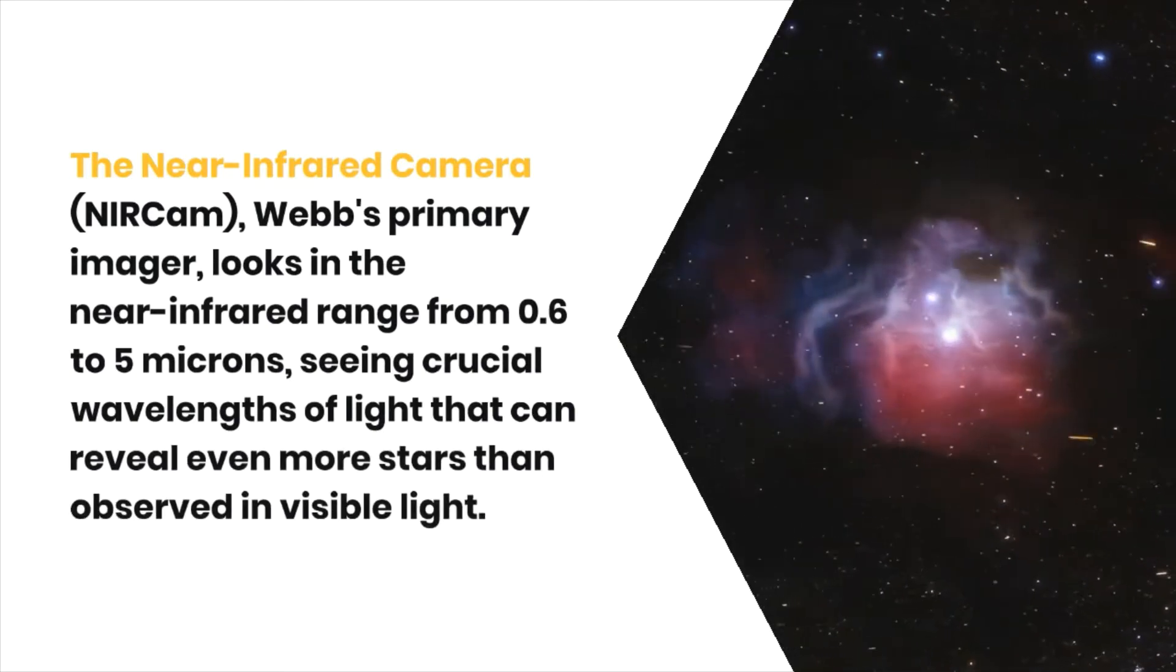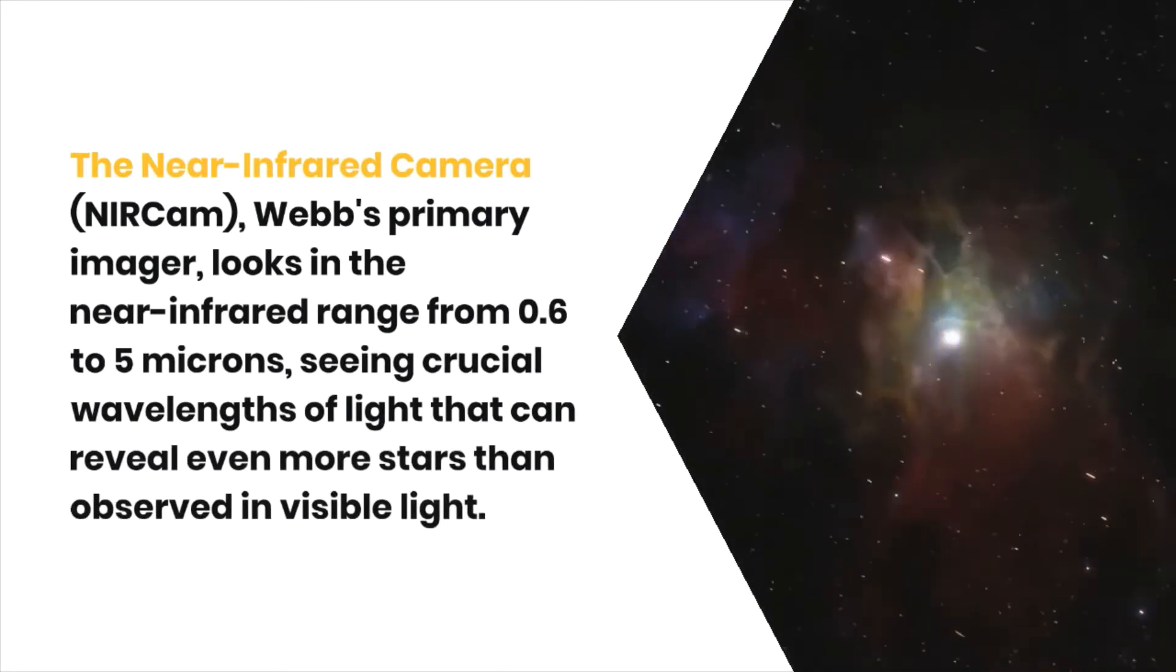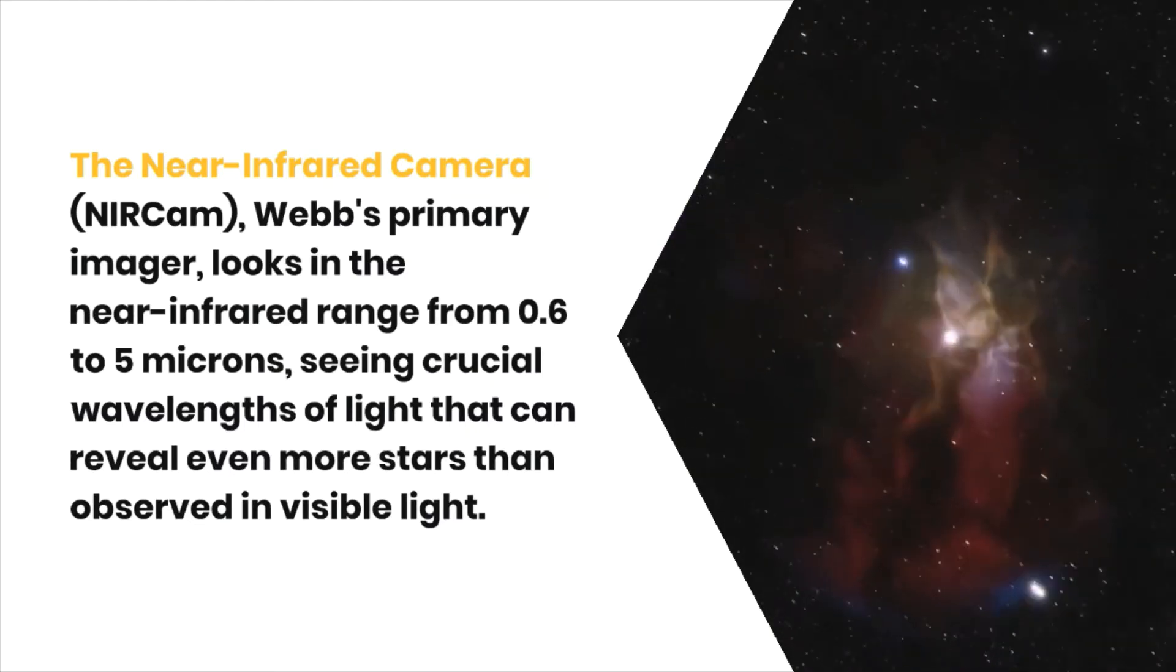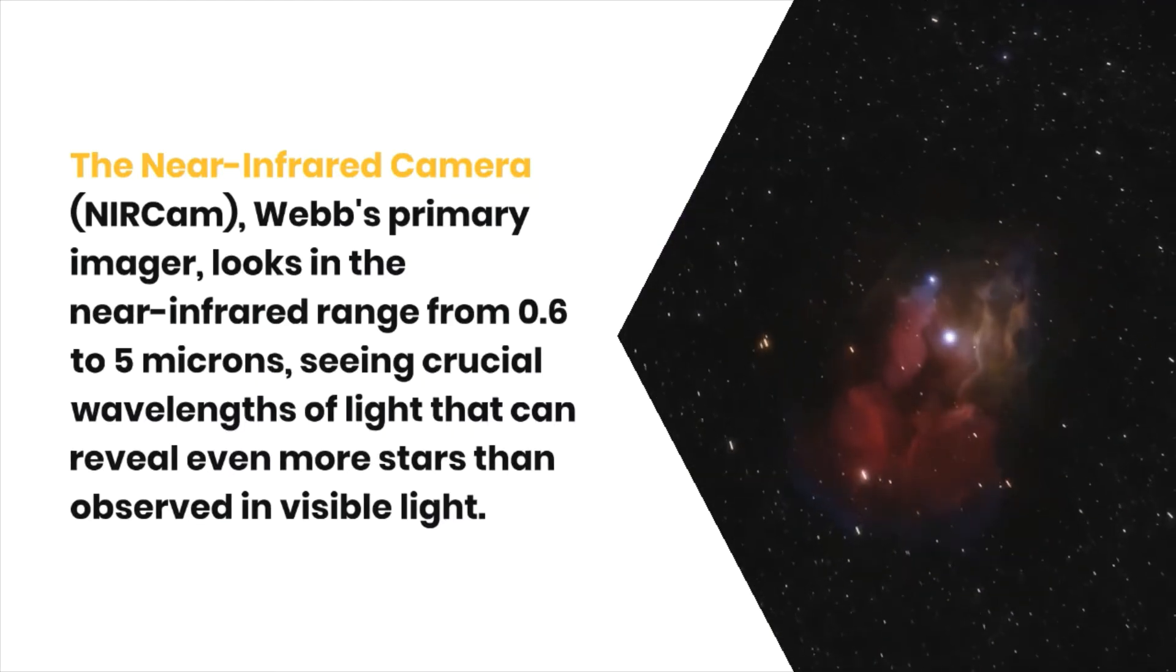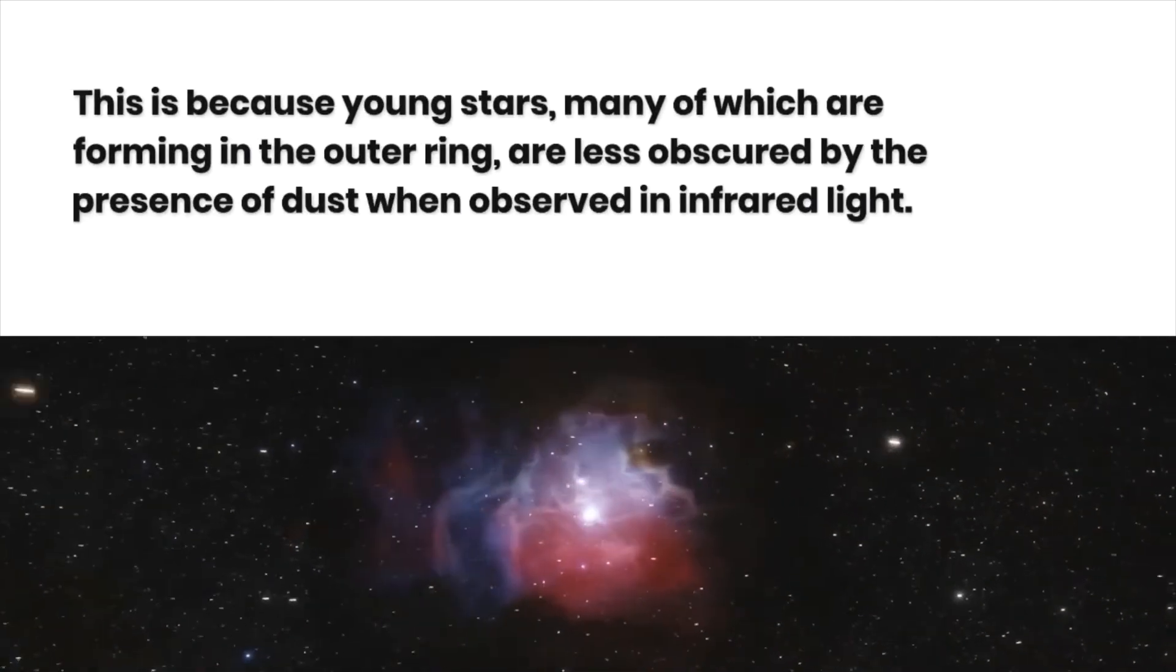The Near-Infrared Camera, Webb's primary imager, looks in the near-infrared range from 0.6 to 5 microns, seeing crucial wavelengths of light that can reveal even more stars than observed in visible light. This is because young stars, many of which are forming in the outer ring, are less obscured by the presence of dust when observed in infrared light.